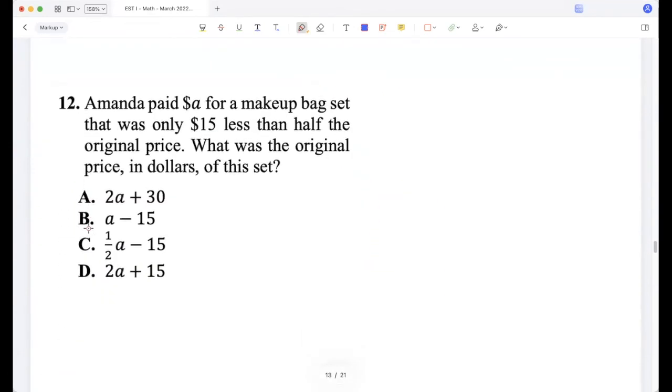Amanda paid a dollars for a makeup bag set. That was only $15 less than half the original price. What was the original price of this set? Okay, so a was $15 less than half the original price. Yeah, so P/2 is a + 15. So P is 2 times (a + 15), which is 2a + 30.